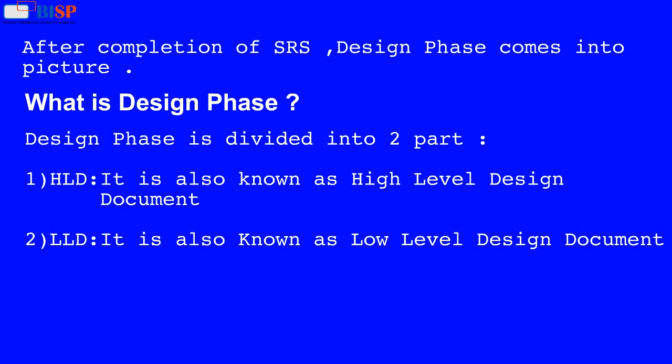What is the Design Phase? The Design Phase is divided into two parts: HLD, also known as the High Level Design document, and LLD, also known as the Low Level Design document.